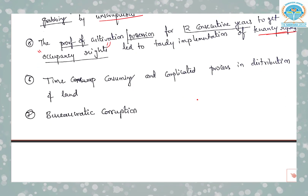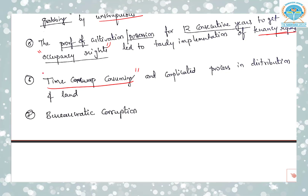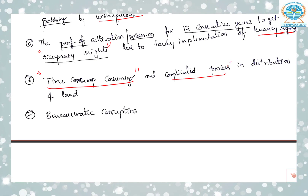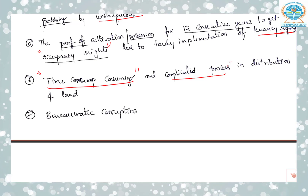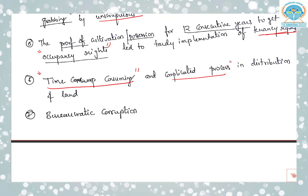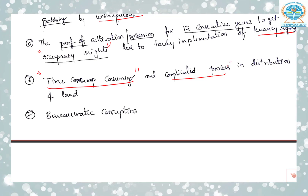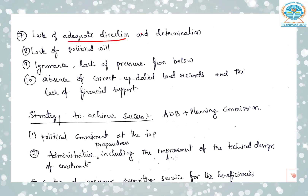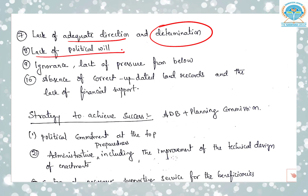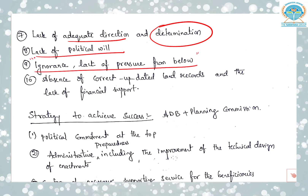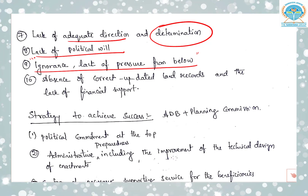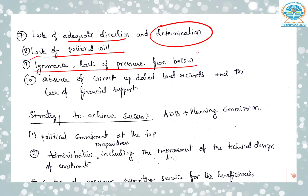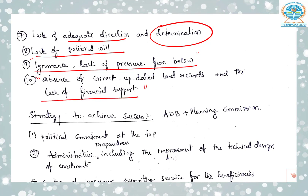The distribution of land was a time-consuming and complicated process. Many zamindars resorted to courts and cases dragged on for many years, making the process complicated for the common man. A major hurdle is bureaucratic corruption. Other reasons include: lack of adequate direction and determination among stakeholders, lack of political will, ignorance and lack of pressure from below. The tenant farmers and sharecroppers were ignorant, and due to prevailing casteism in society there was lack of pressure from below. Absence of correct, updated land records and lack of support also decreased the efficacy of these legislations.